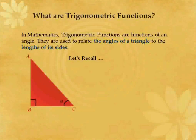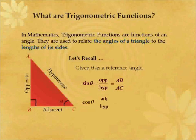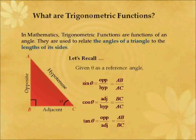Let us recall that given theta as a reference angle, this would be the hypotenuse, this would be the opposite, and this would be the adjacent. Sine of theta is defined as opposite over hypotenuse, and in this diagram it is given as AB over AC. The cosine of theta is defined as adjacent over hypotenuse, and in this diagram is defined as BC over AC. Last but not least, the tangent of theta is defined as opposite over adjacent, which is given as AB over BC.